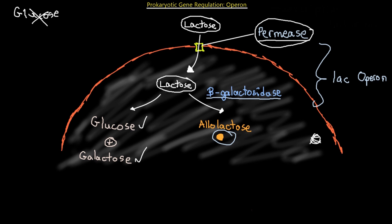The operator is being repressed by the repressor made by the lac-I regulatory gene, but it needs to be inhibited. We need to inactivate the repressor so that we can make more permease and more beta-galactosidase to actually break down the lactose and use it for energy, because glucose is not available at the moment.